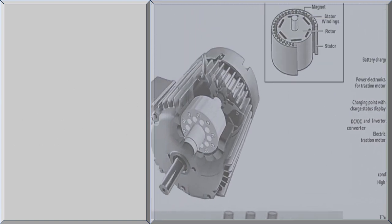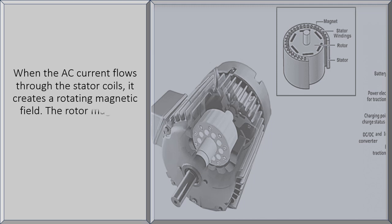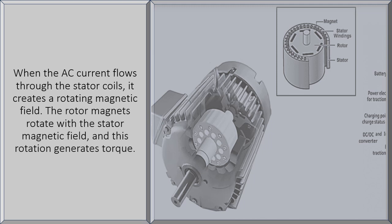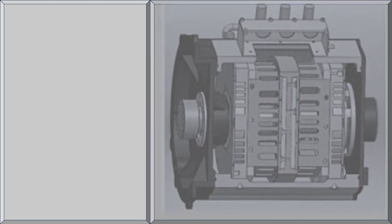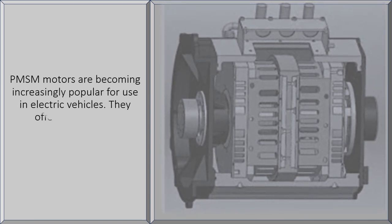When the AC current flows through the stator coils, it creates a rotating magnetic field. The rotor magnets rotate with the stator magnetic field, and this rotation generates torque. PMSM motors are becoming increasingly popular for use in electric vehicles.